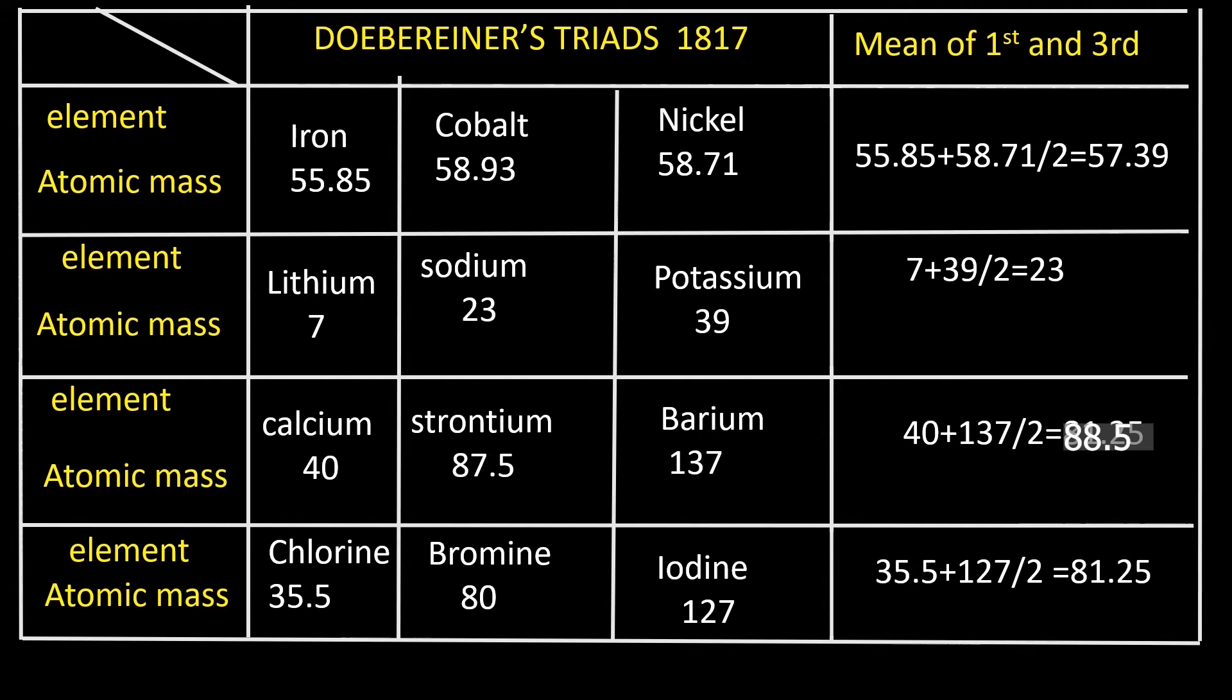Please go through the table provided. Examples for the triads are iron, cobalt, nickel; lithium, sodium, potassium; calcium, strontium, barium; chlorine, bromine, iodine. Four examples are given. You can see that the atomic weight of the middle element is equal to or almost the same as the average of the other two elements. It is worked out in the last column.